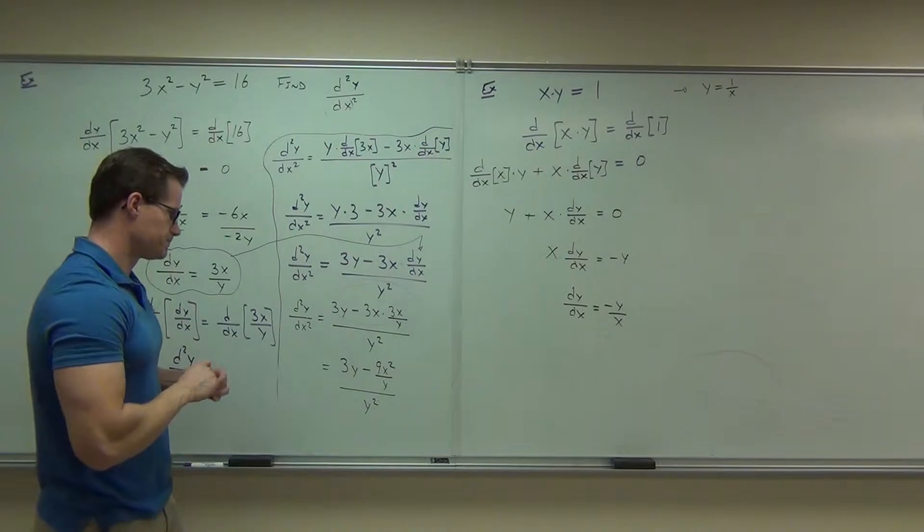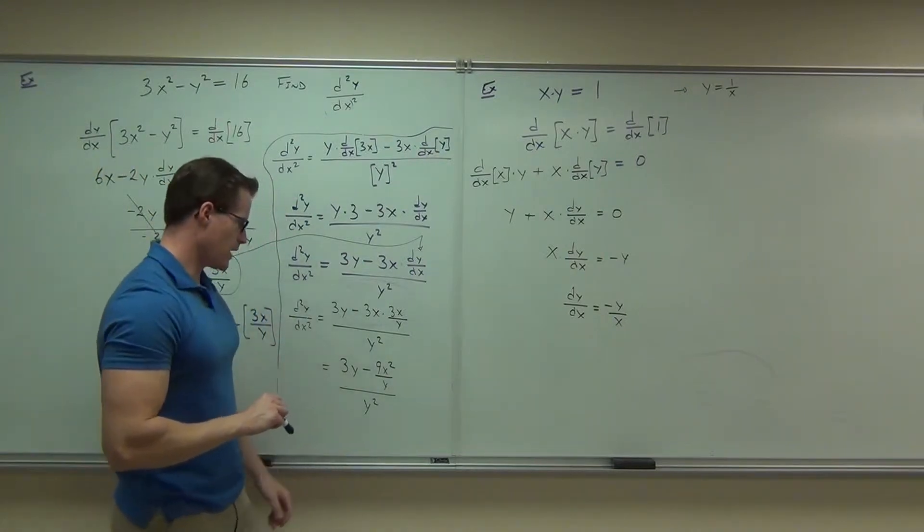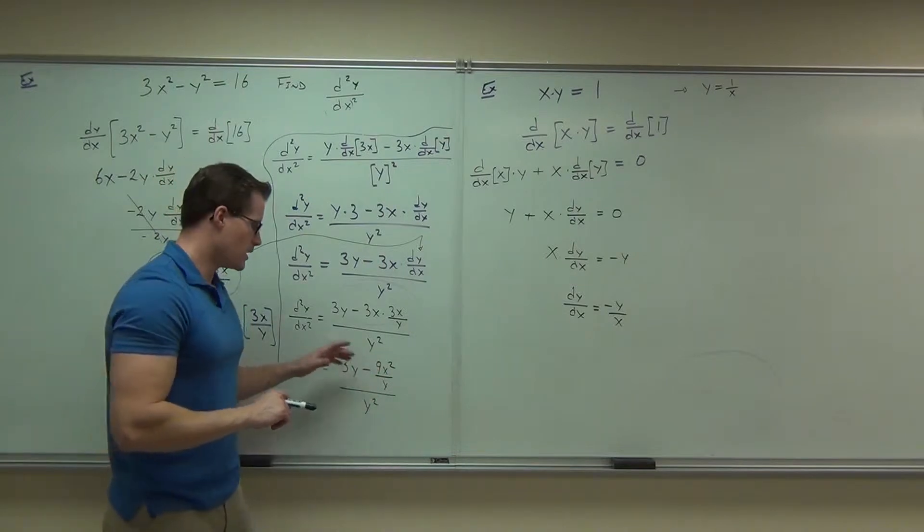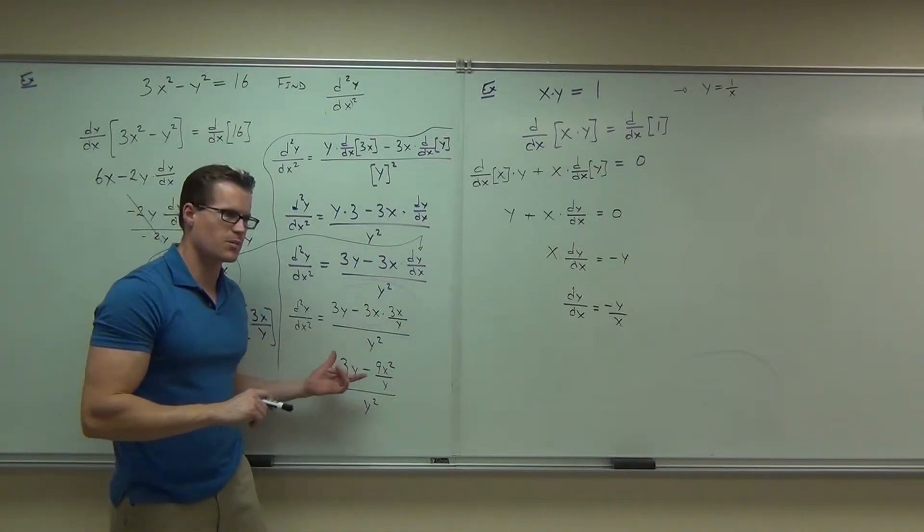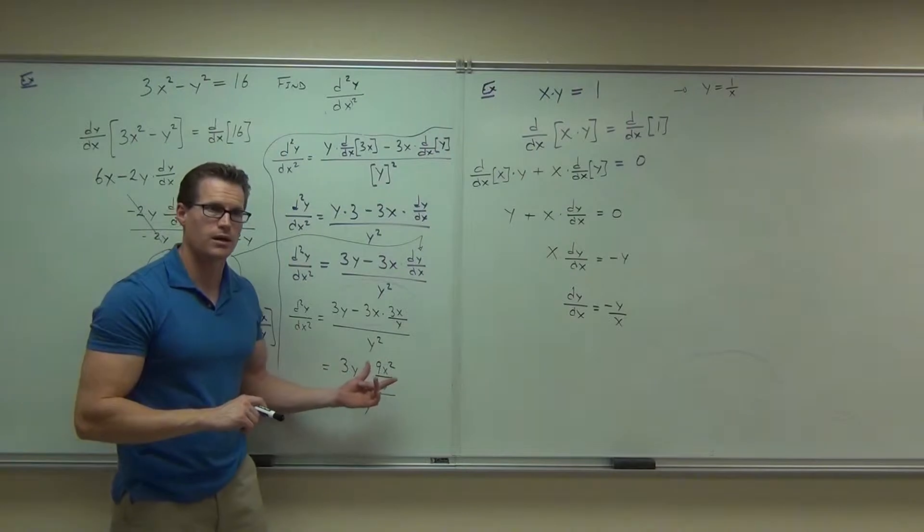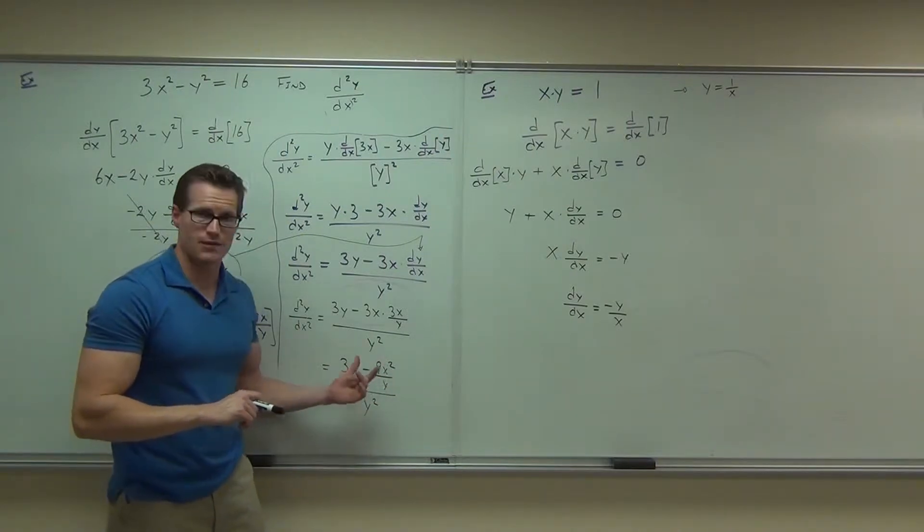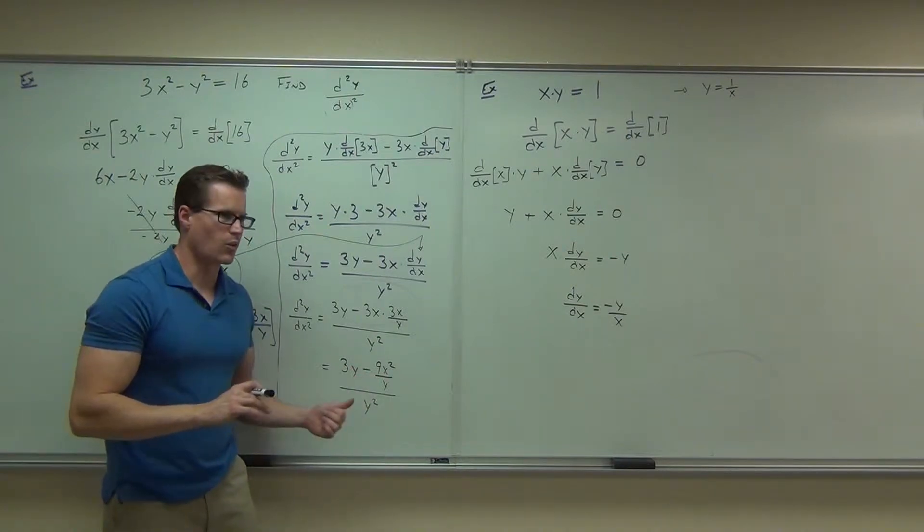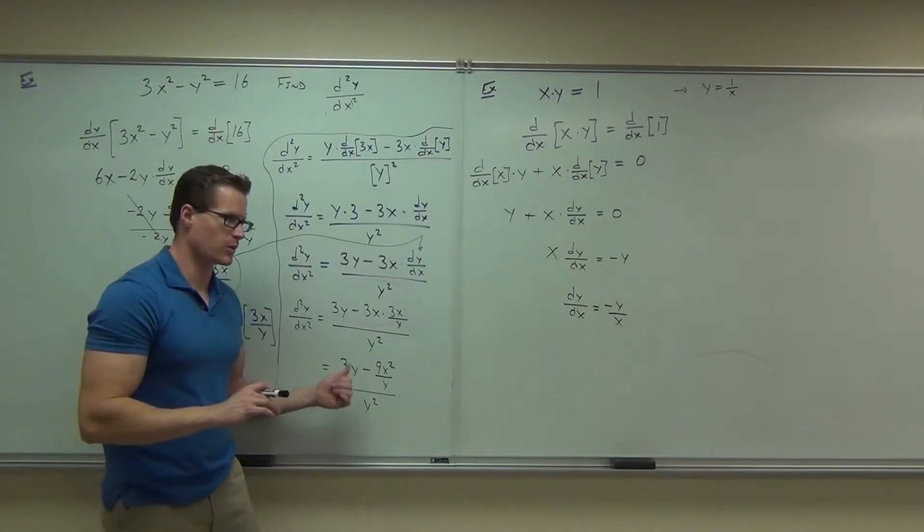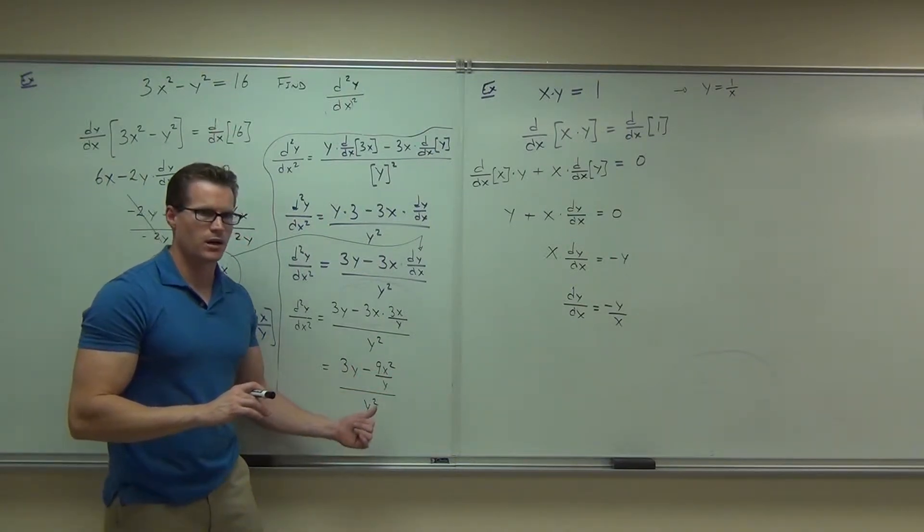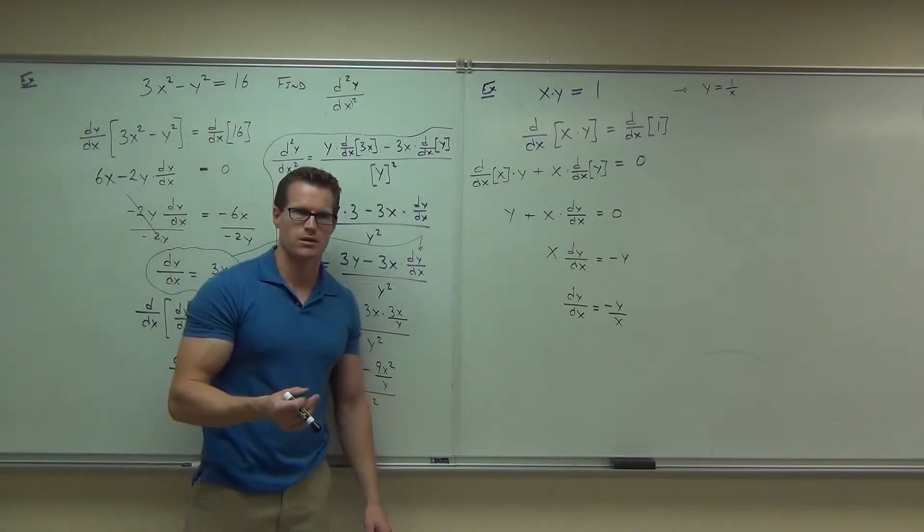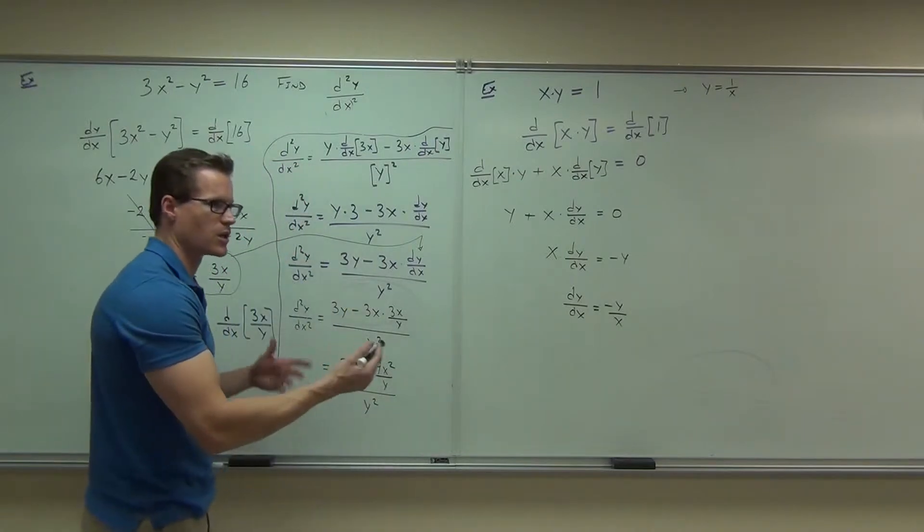Now, chances are, for you guys, you might not always get it like this, alright? If the back of the book looks different than this, what they probably did because you have complex fractions, they got rid of that y. If you wanted to get rid of it easily here, instead of finding a common denominator, just multiply everything by y, and that would get rid of it. You're going to get 3y squared minus 9x squared over y cubed. Do you see what I'm talking about? That should be the same thing as finding a common denominator.